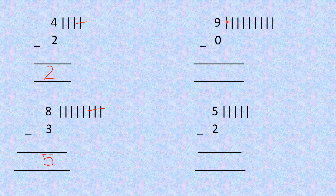One, two, three, four, five, six, seven, eight, nine. Now here it is zero. It means out of nine lines, how many lines do I need to cut? Nothing — no lines. So if I haven't cut any line, my answer will remain the same. It will be nine only — number nine.